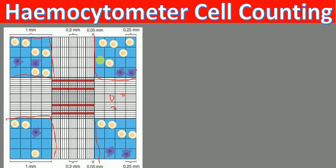Let's count how many cells are live and how many cells are dead within this square. Let's first count live cells: 1, 2, 3, 4, 5, 6 in this square, 7, 8, 9, 10, 11, 12, 13, 14, 15, 16, 17, and 18. So the number of live cells counted are 18.